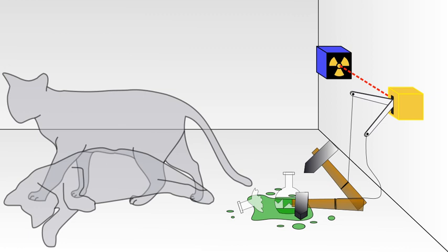Schrodinger's Cat is a thought experiment, sometimes described as a paradox, devised by Austrian physicist Erwin Schrodinger in 1935. It illustrates what he saw as the problem of the Copenhagen interpretation of quantum mechanics applied to everyday objects, resulting in a contradiction with common sense. The scenario presents a cat that may be both alive and dead, depending on an earlier random event.